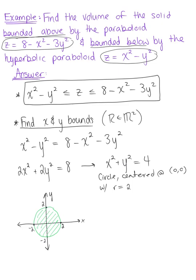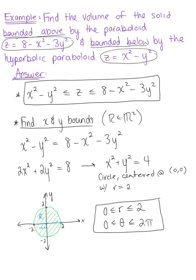Since it's a full circle, it will be easier to integrate in polar coordinates. The smallest radius is at the origin and the largest is 2, so r goes from 0 to 2. Since it's a full circle, theta goes from 0 to 2π.